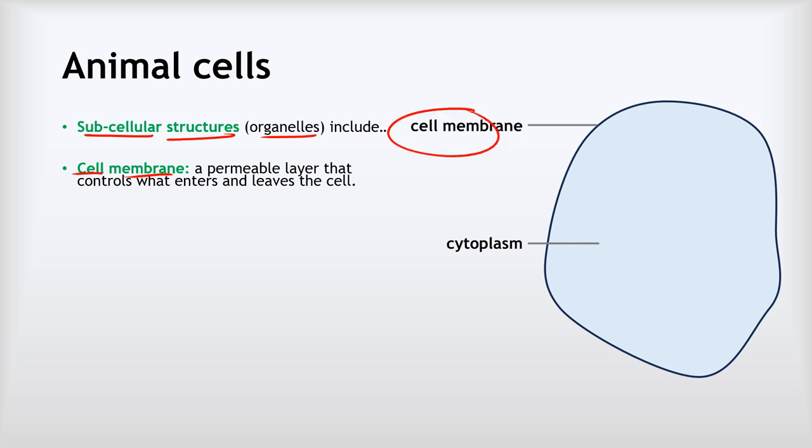And the first one is the cell membrane here. Now the cell membrane is this layer or boundary around the entire outside of the cell. It's a permeable layer that controls what enters and leaves the animal cell. The next thing we've got is inside the cell membrane - the cytoplasm. This is a jelly-like substance where chemical reactions take place.